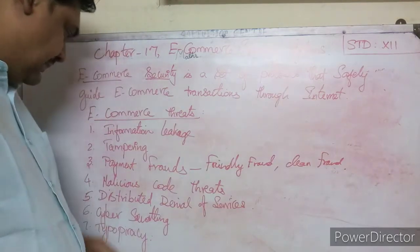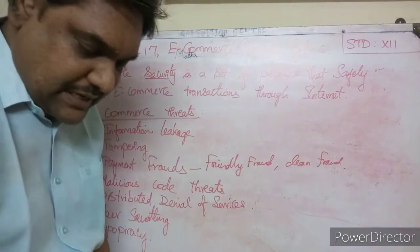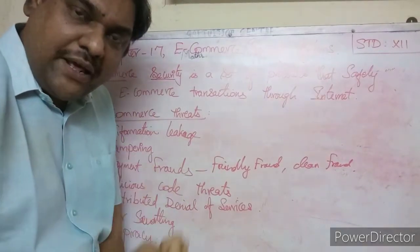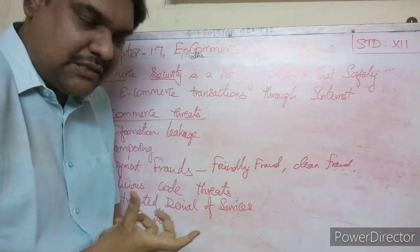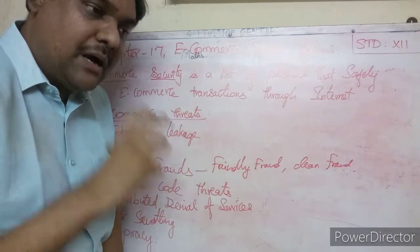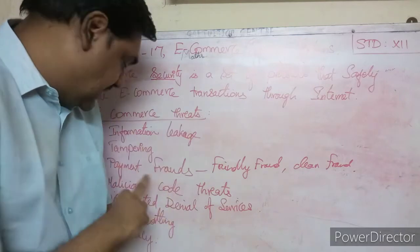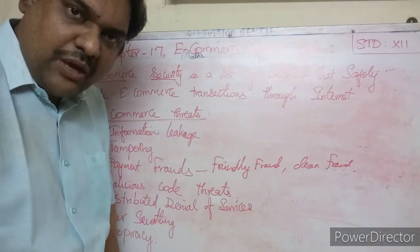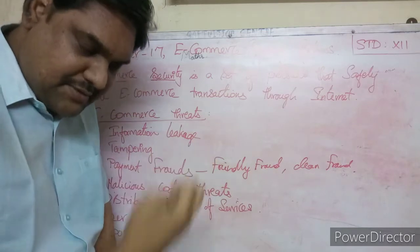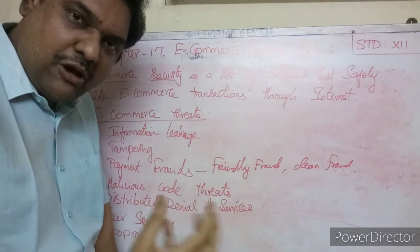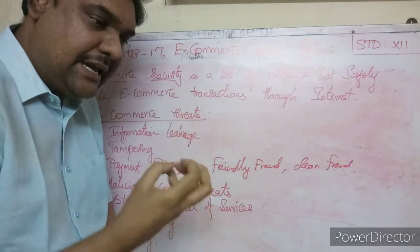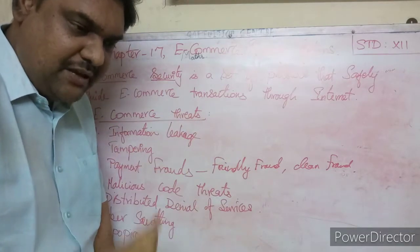The next threat is Malicious Code Threat. Malicious code can be inserted into websites through PHP code, HTML code, SQL code, or other types of code. Through techniques like cross-site scripting or SQL injection, hackers can extract money, steal credit card details, and bank details from e-commerce websites.